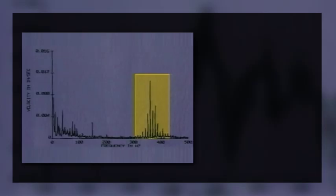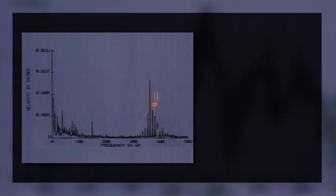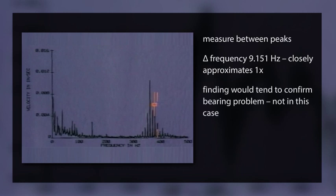So let's look at the family of peaks between 300 and 400 hertz. The pattern looks similar to a gear mesh frequency, but there are no gears in this pump. So what might this be? Well, sometimes you get lucky, and you catch a bearing defect in its infancy before the fault frequencies we're used to seeing can form. If you find a family of regularly spaced peaks at a relatively high frequency, measure the space between the peaks. In this case, we find a delta frequency of 9.151 hertz, which very closely approximates the one-times. Normally, this finding would tend to confirm a bearing problem, but perhaps not in this case.